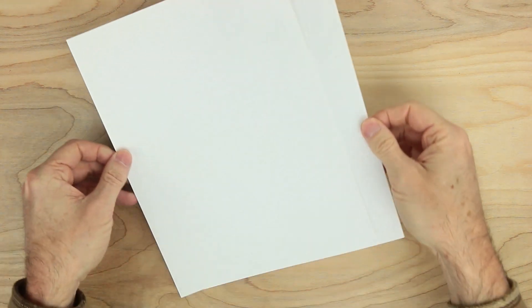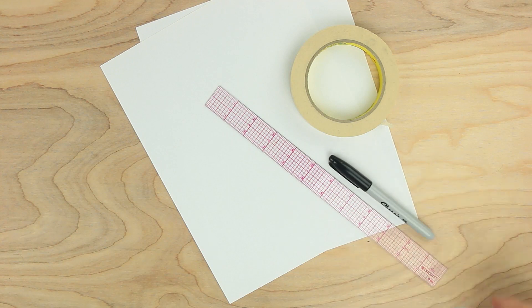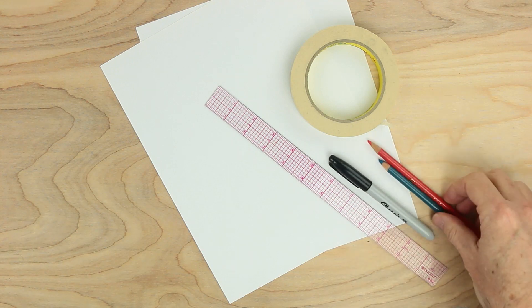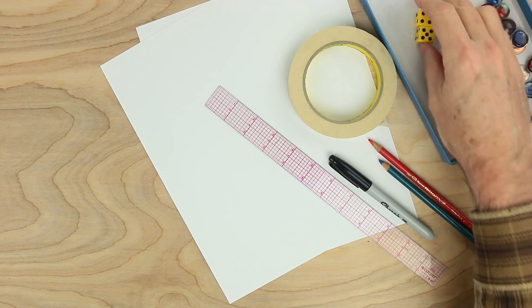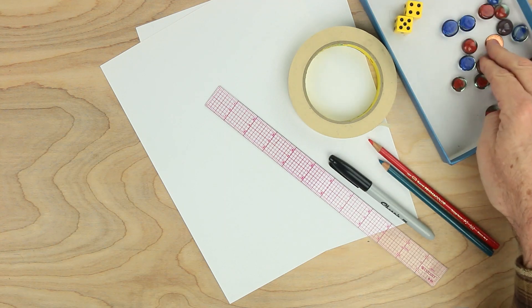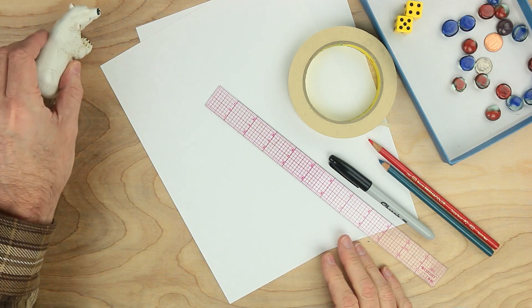For this game, we'll need a couple sheets of paper, a ruler, a little bit of tape maybe, something to write with, maybe a couple colored pencils, some playing pieces, a couple dice, maybe a dime and a penny. And we'll need something else. What is it? Oh, I know what we need. We'll need a bear.